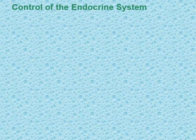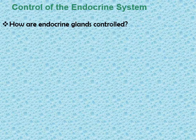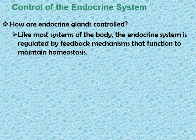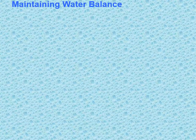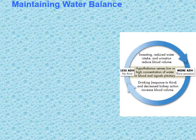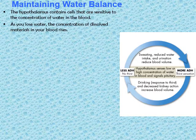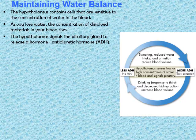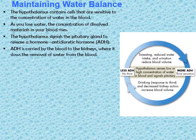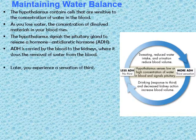Now to the second major section: the control of the endocrine system. Like most body systems, the endocrine system is regulated by feedback mechanisms that function to maintain homeostasis. The first example is maintaining water balance, or osmoregulation. The hypothalamus contains cells sensitive to the concentration of water in the blood. As you lose water, the concentration of solutes in your blood rises. The hypothalamus signals the pituitary gland to release a hormone called ADH, which is carried by the blood to the kidneys where it slows the removal of water from the blood, accompanied by a sensation of thirst.